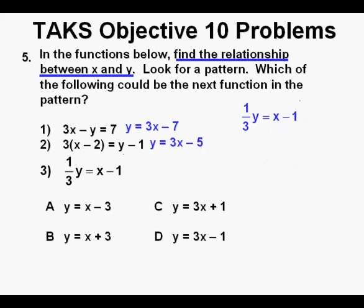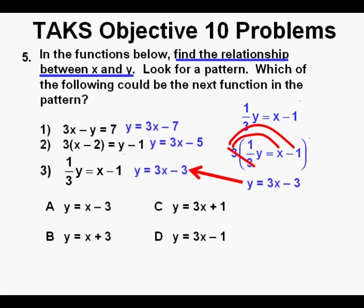And finally we take the third function to solve for Y and it's 1 third Y equals X minus 1. We can solve for Y by multiplying the equation by 3. When we multiply, the 3 over 3 cancel and we have 3 times X and 3 times negative 1. So what we have left is Y equals 3x minus 3. And we'll place this equation next to the original function number 3.